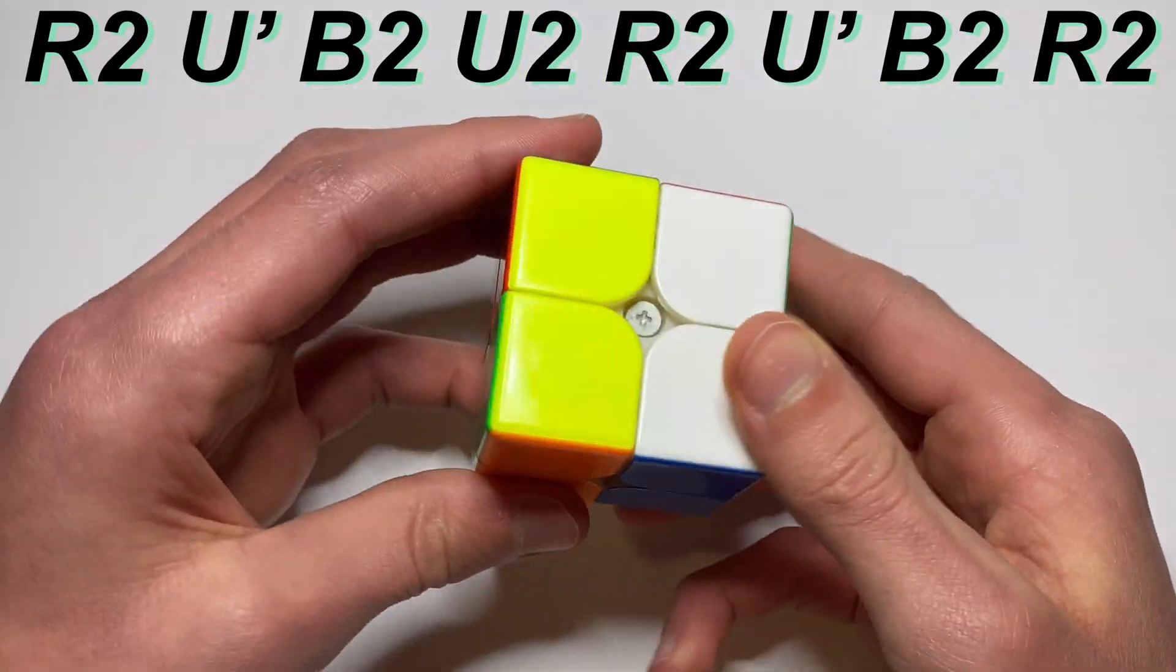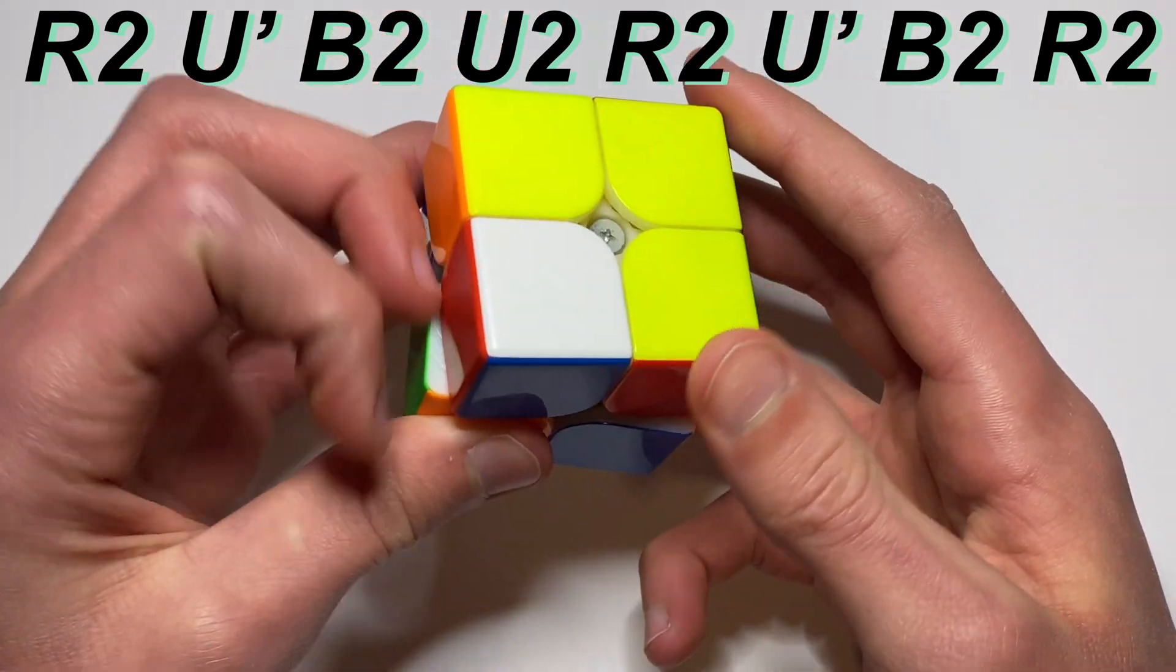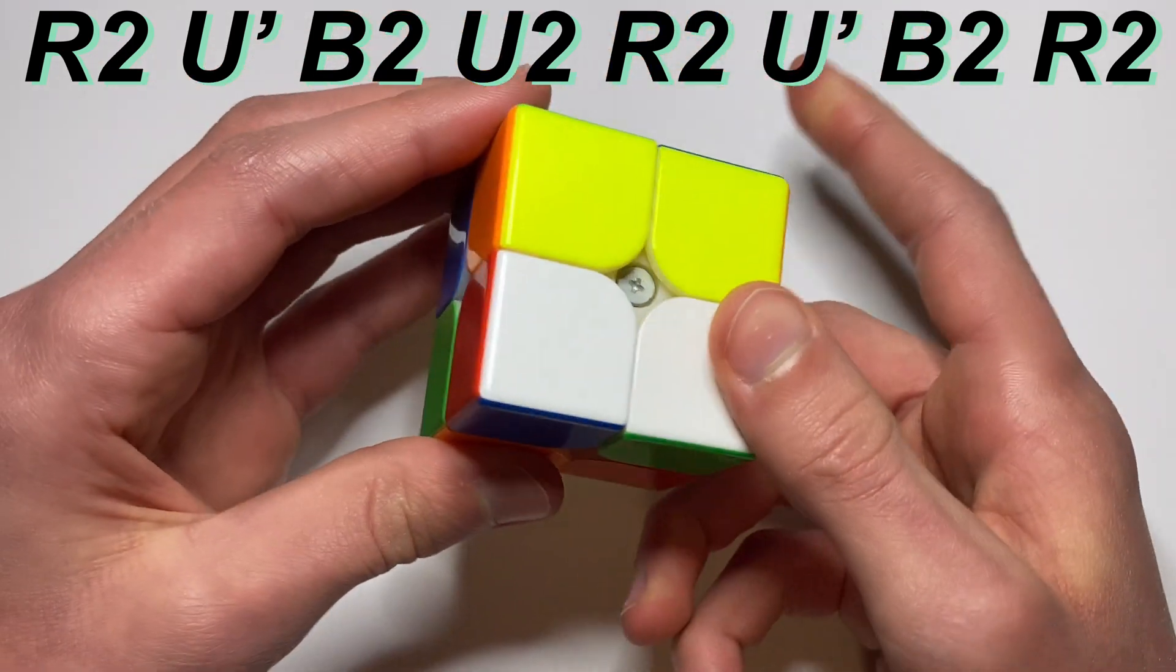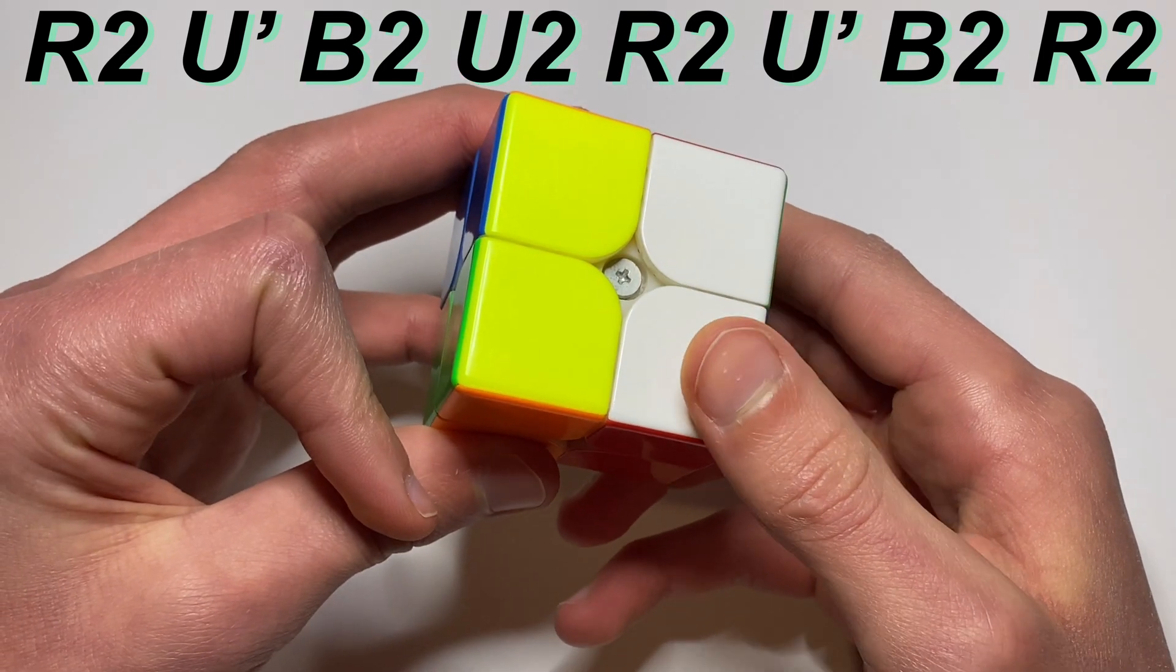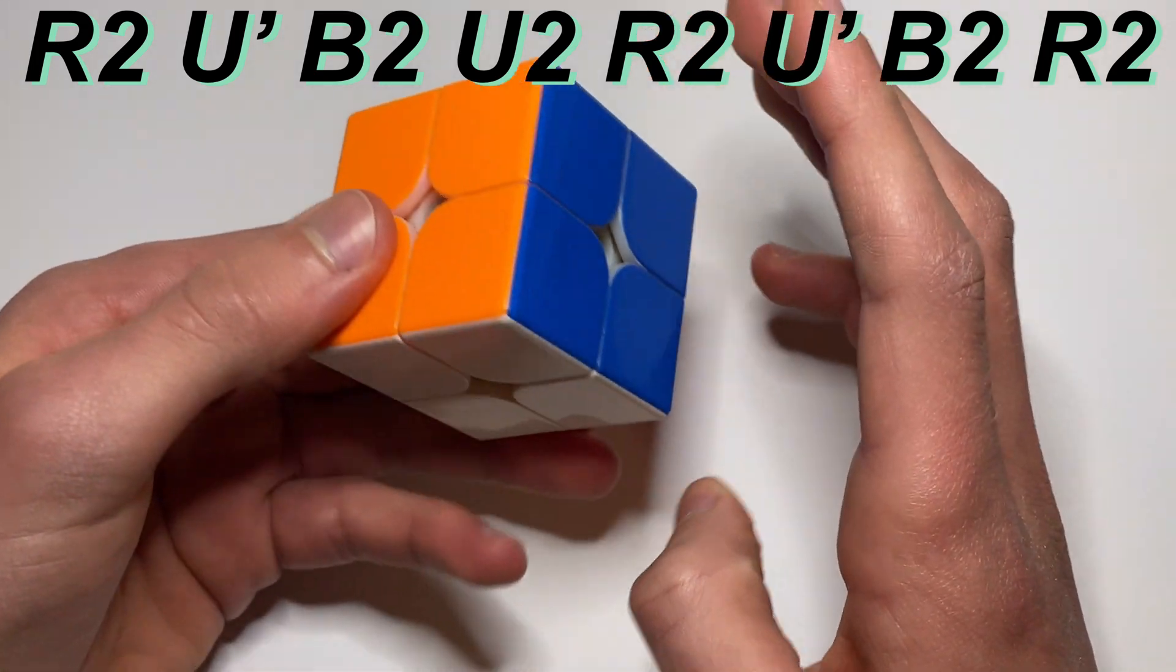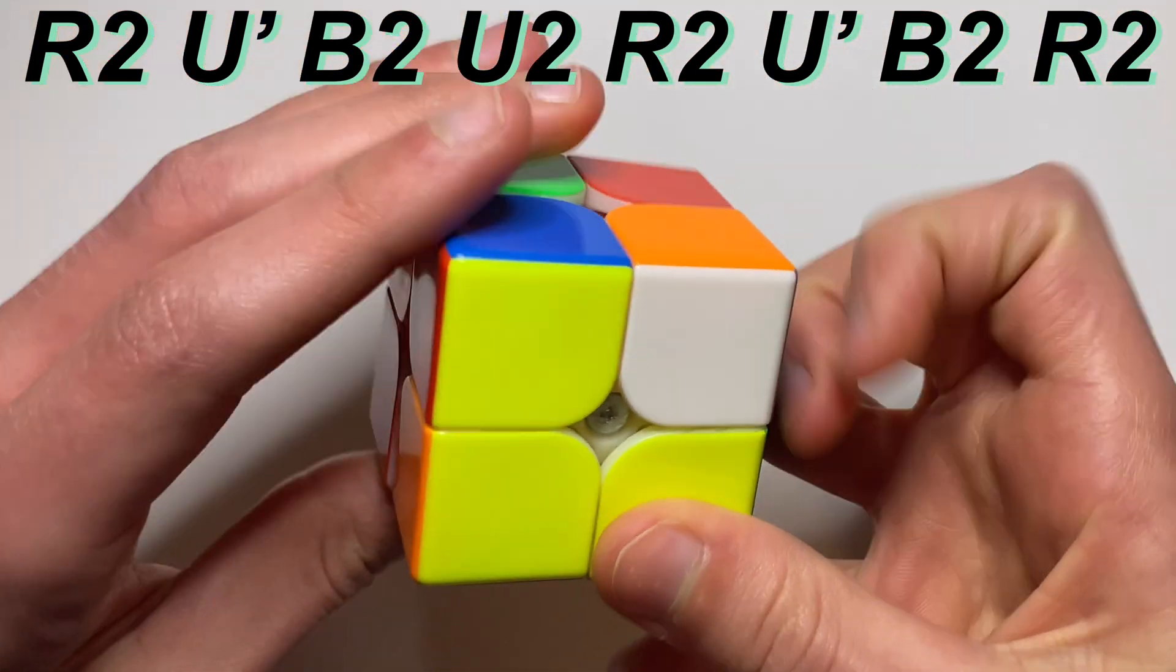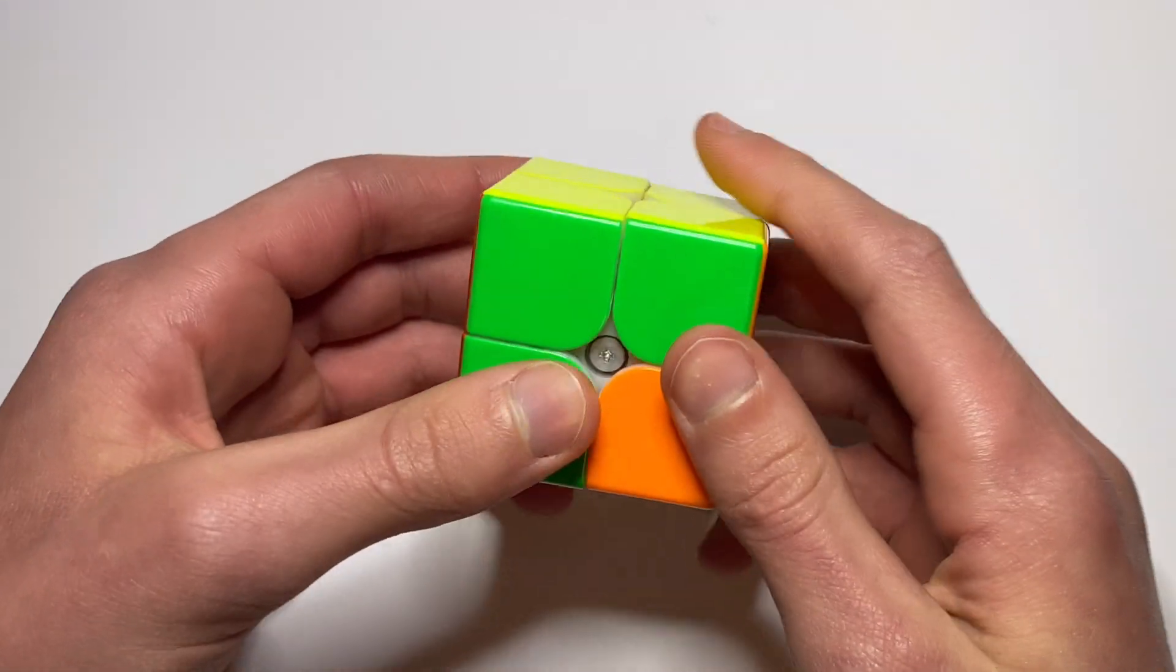Instead of rotating like that and then doing your algorithm, the way you do that is you go like this: you do R2 U prime B2 just like you start off with the normal one, then you do U2, then you do R2, then U prime, and then instead of doing R2 what you do is B2 R2. So you just add a B2 at the end.